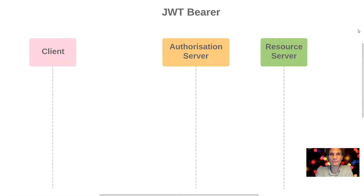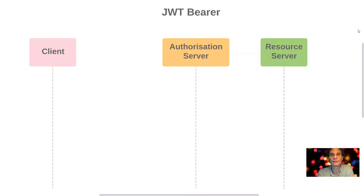For both JWT Bearer and SAML Assertion Bearer, there are three main systems involved: the client, which is typically a client server application; the authorization server, where the user's authorization is held; and the resource server, which is the application that the client will be integrating with.